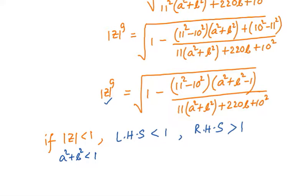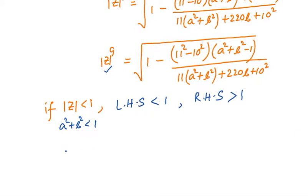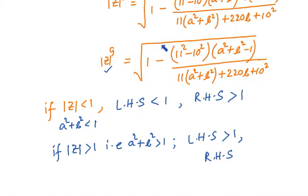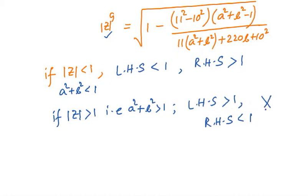On the other hand, if we consider mod z greater than 1 — that is, a squared plus b squared greater than 1 — then the LHS will be greater than 1. But the RHS: since a squared plus b squared is greater than 1, the quantity is positive, making the subtracted term positive, so the whole quantity inside the root is less than 1. Thus RHS is less than 1 — again a contradiction.